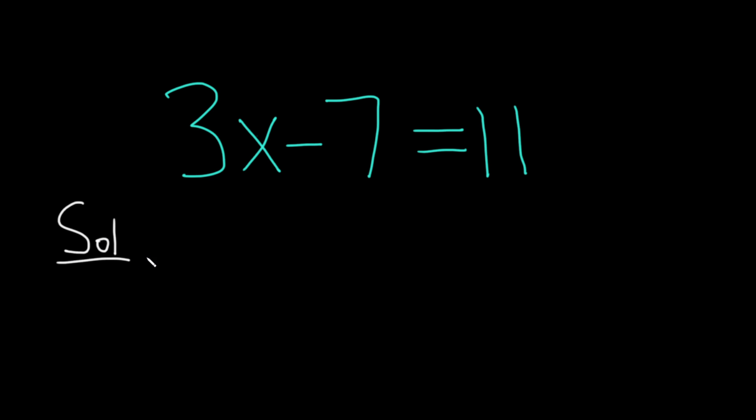Solution. Because there's a minus 7 here, the first thing you want to do is add 7 to undo that, because you want to isolate the term with x, which is 3x. So you've got to get rid of this minus 7. To get rid of a minus, use the inverse operation, which is addition. So you add 7 to both sides and these go away.